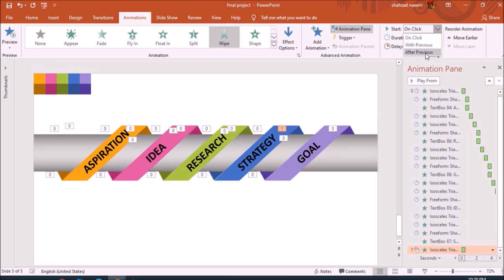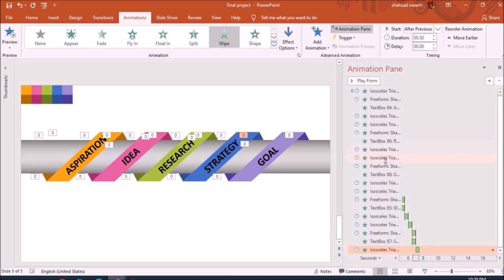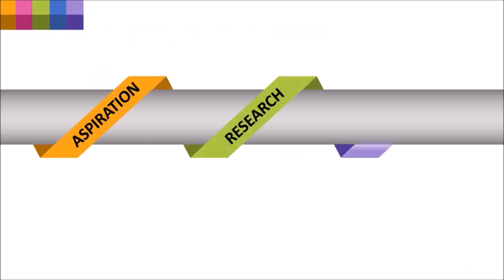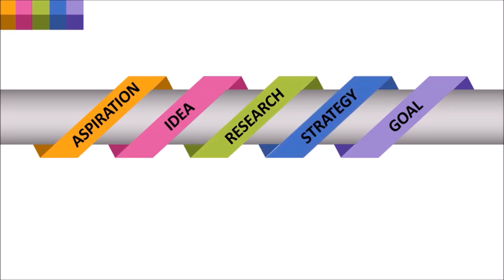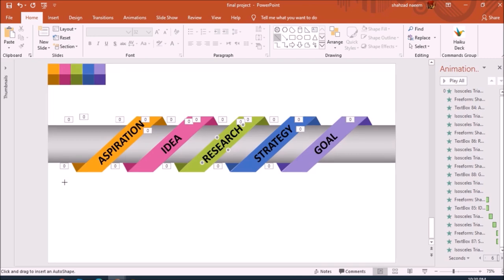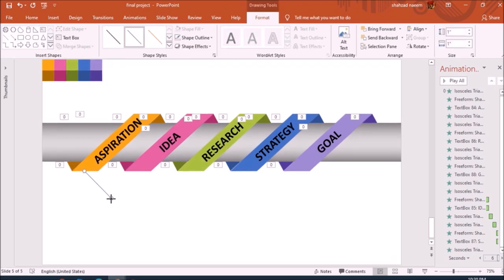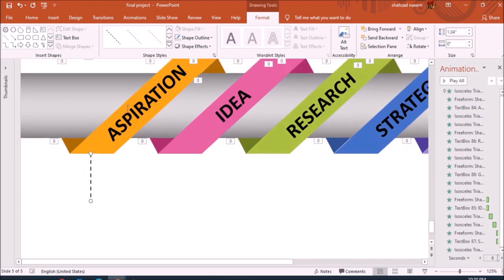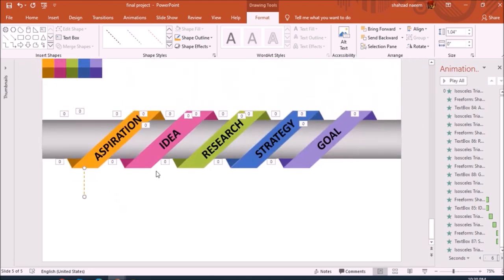Let's have a look: the first step animates in, the second step — that's looking amazing! If you want to adjust the speed or delay, you can go into the settings and try different formats. If you wish to use only these five steps as they are, you can stop here. But if you want to add more descriptive text below the steps, I'll show you how to add more text boxes.